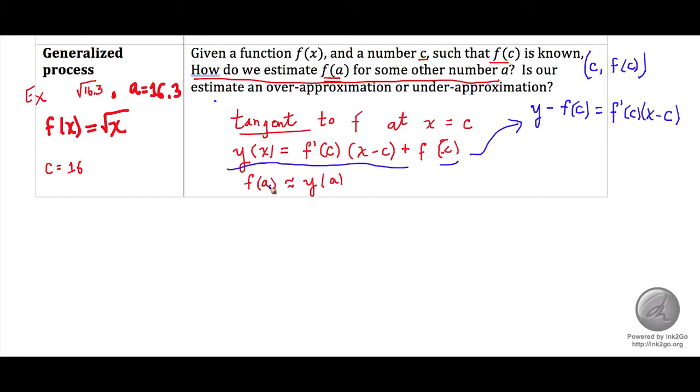And if we wanted to find the value of f of a, we know that it's approximately equal to y of a. In other words, we're going to take x and substitute a in there. So y of a in this case would be equal to f prime of c times a minus c plus f of c.